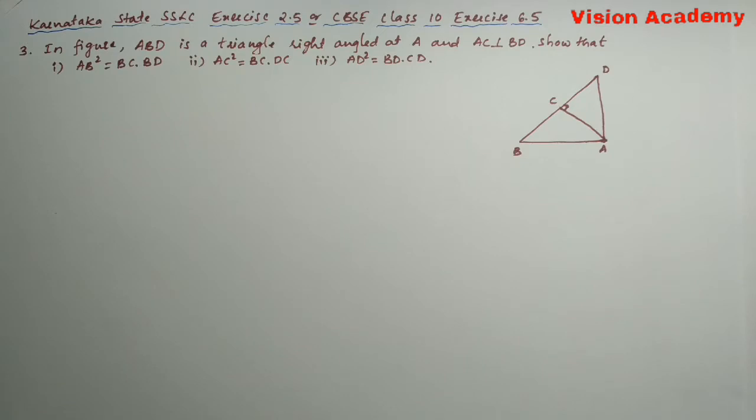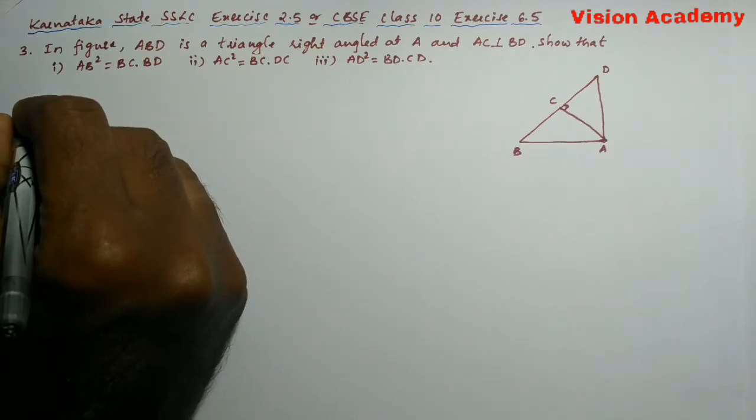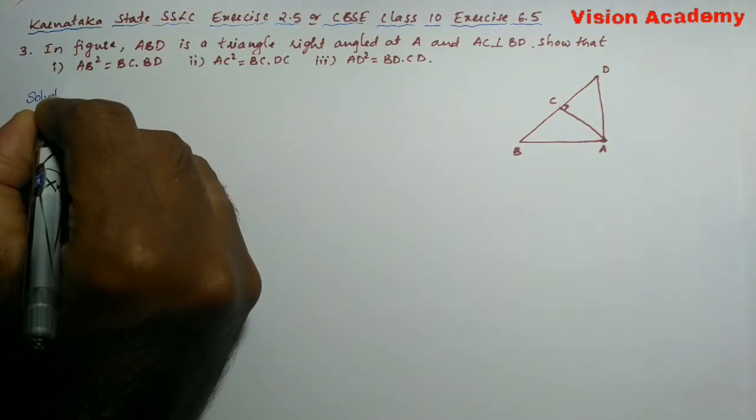In figure, ABD is a triangle right angled at A and AC is perpendicular to BD. Show that number one, AB square is equal to BC into BD. Now, let us find the solution for the given problem.